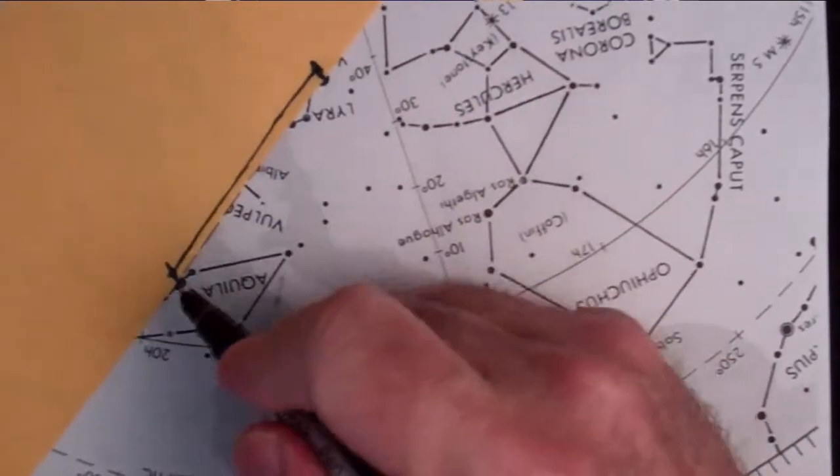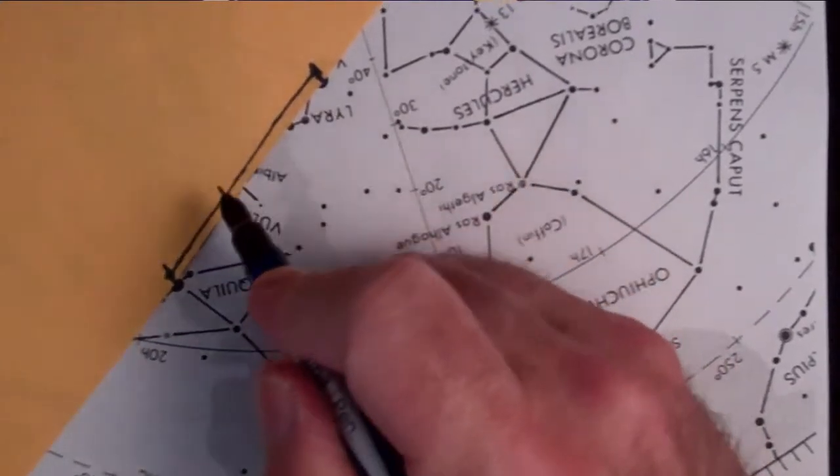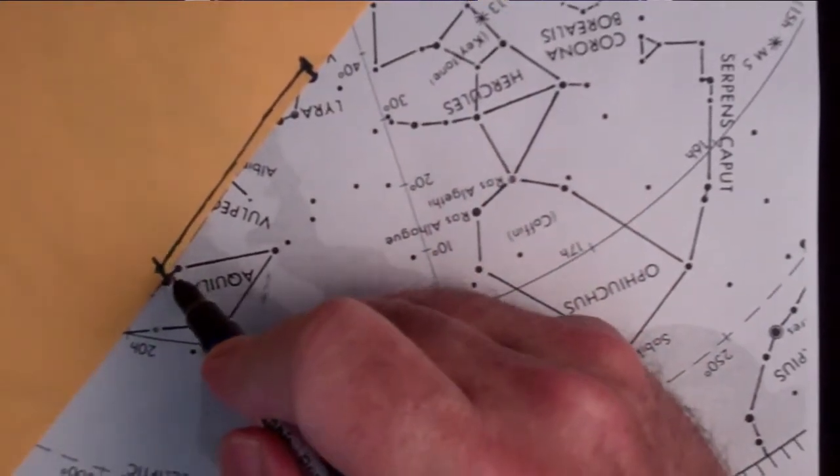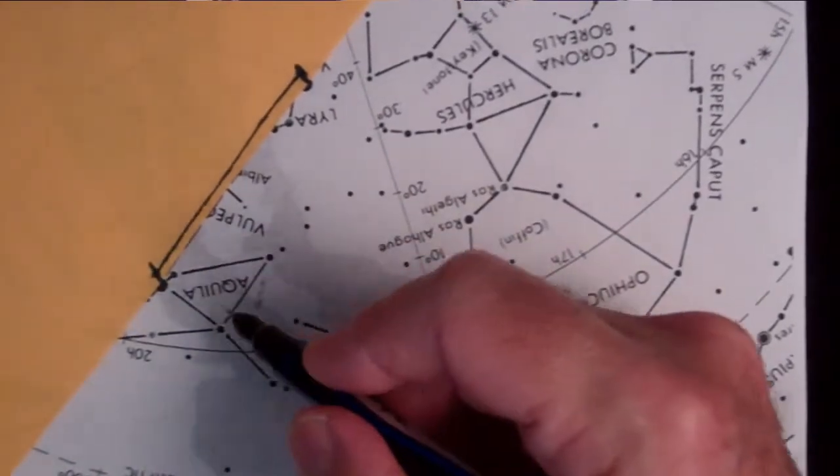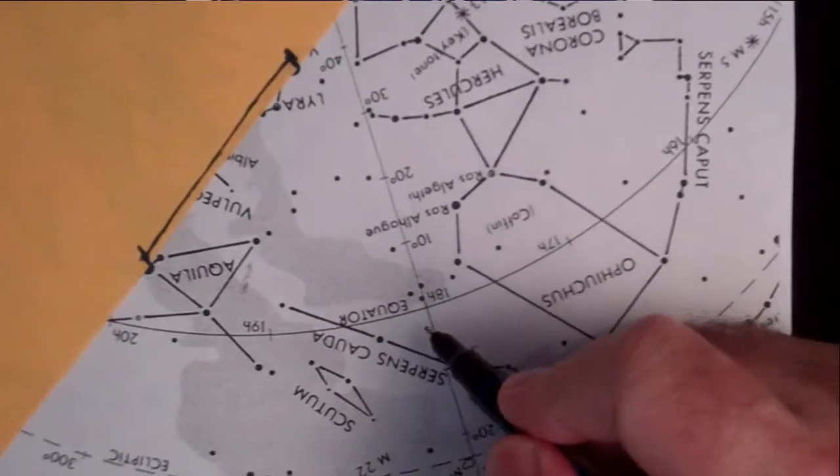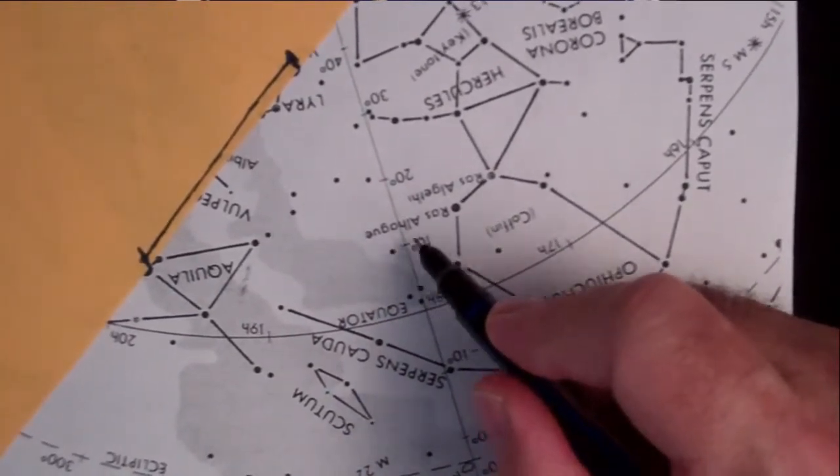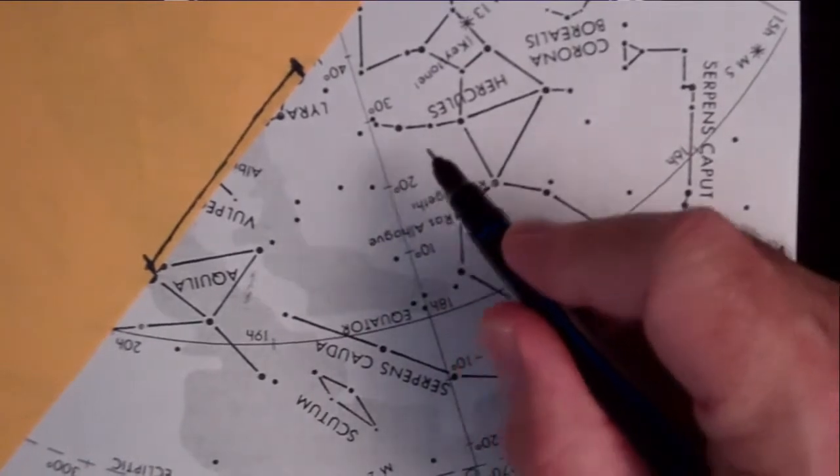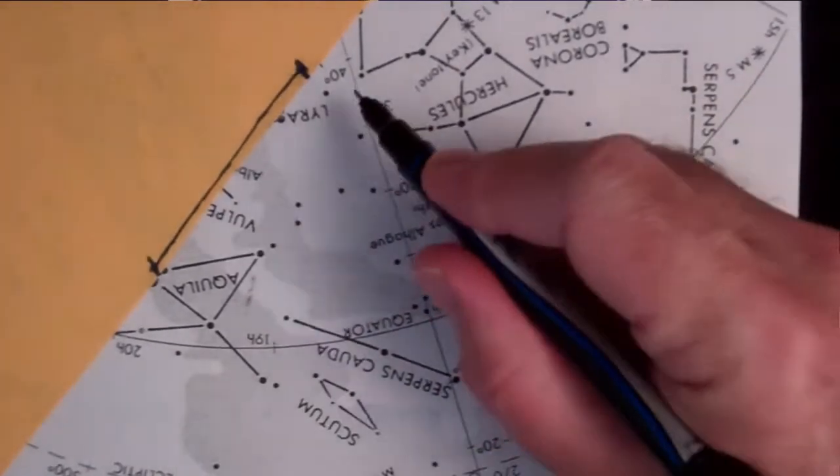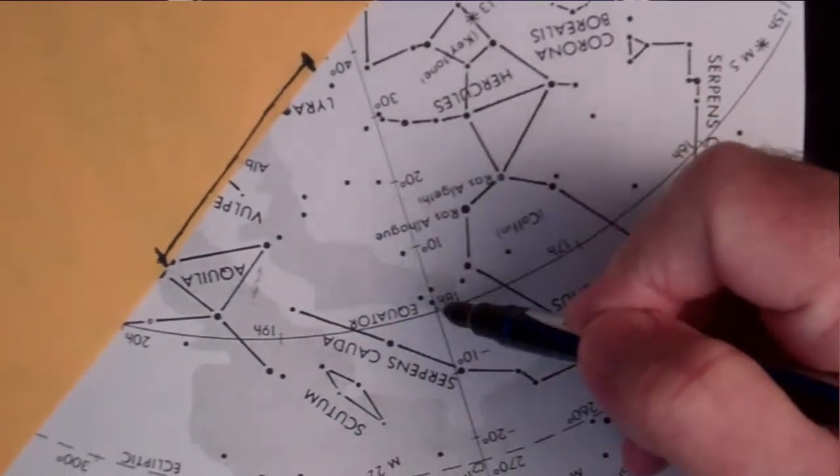Now, to measure the length of that segment in degrees, we need to come over and compare it against the scale. So if we come over here, this solid line is the equator, and that's zero degrees. And you notice up here is 10 degrees, and there's 20, and there's 30, and there's 40. So we're going to bring this line segment and measure it against these numbers here.